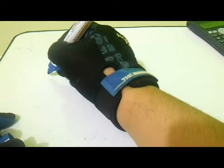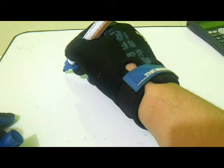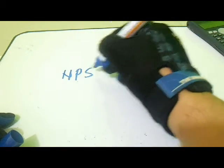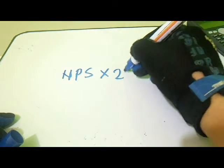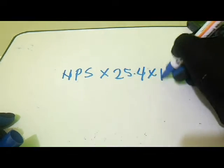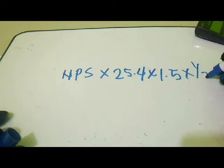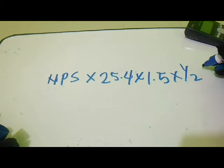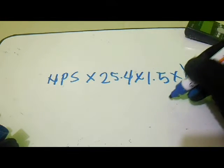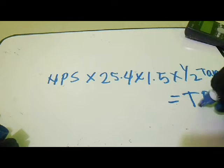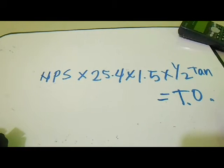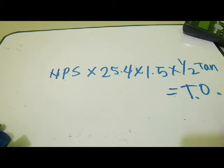The formula for the special take-off is: NPS multiply by 25.4 times 1.5, and multiply by one-half tangent of the degrees, equals take-off. Okay, let's compute for this example.